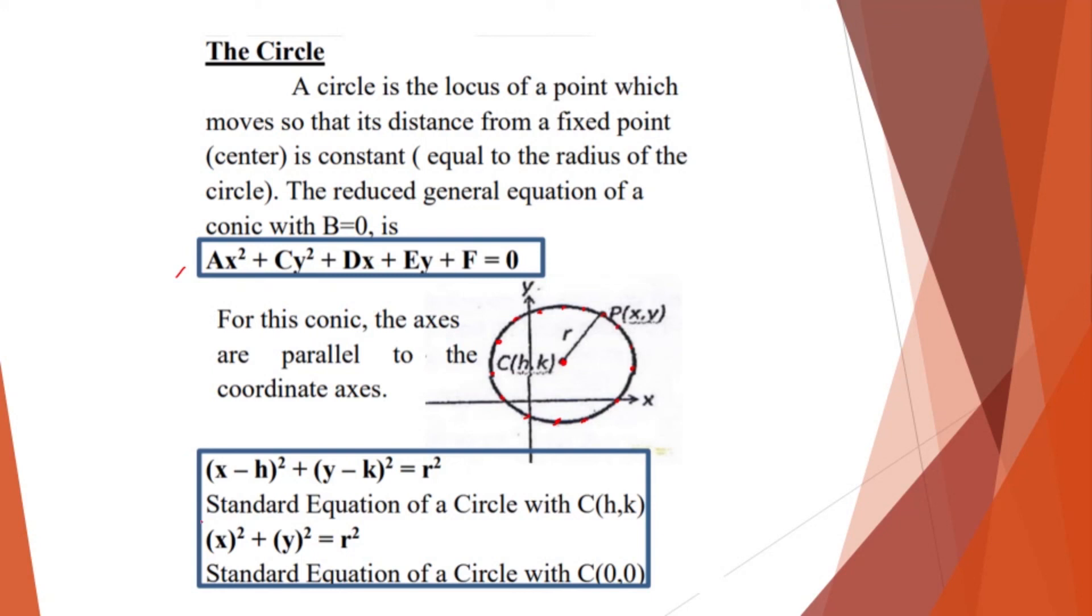Okay, so we have this standard equation of a circle here with center at any point h and k. So the same with our example here. So the center is at point h, k. So this will be our standard equation of a circle, which is x minus h squared plus y minus k squared is equal to r squared. Which is the radius.